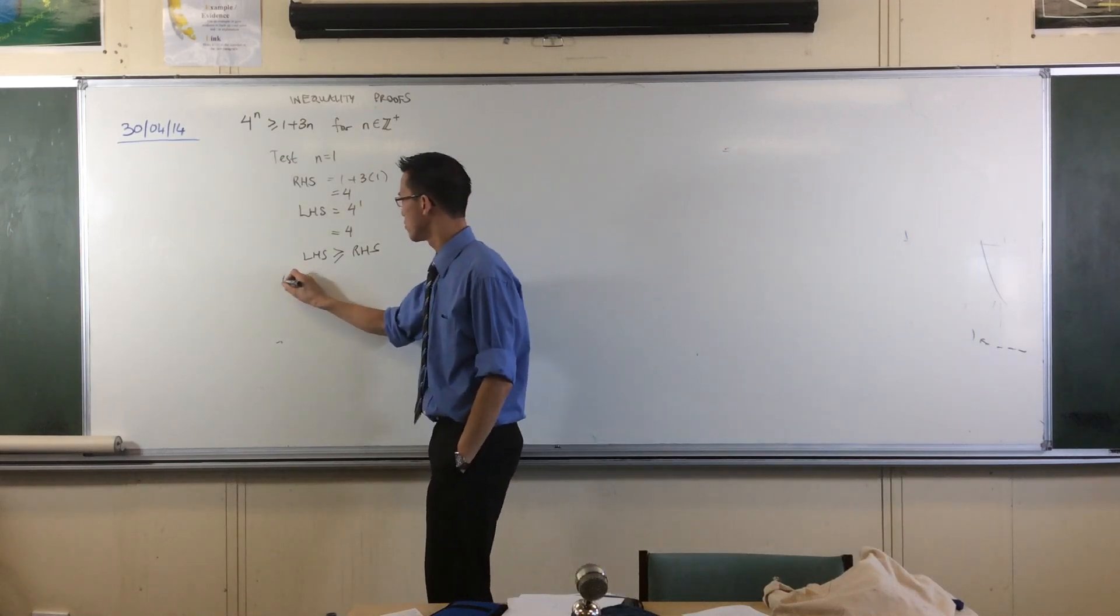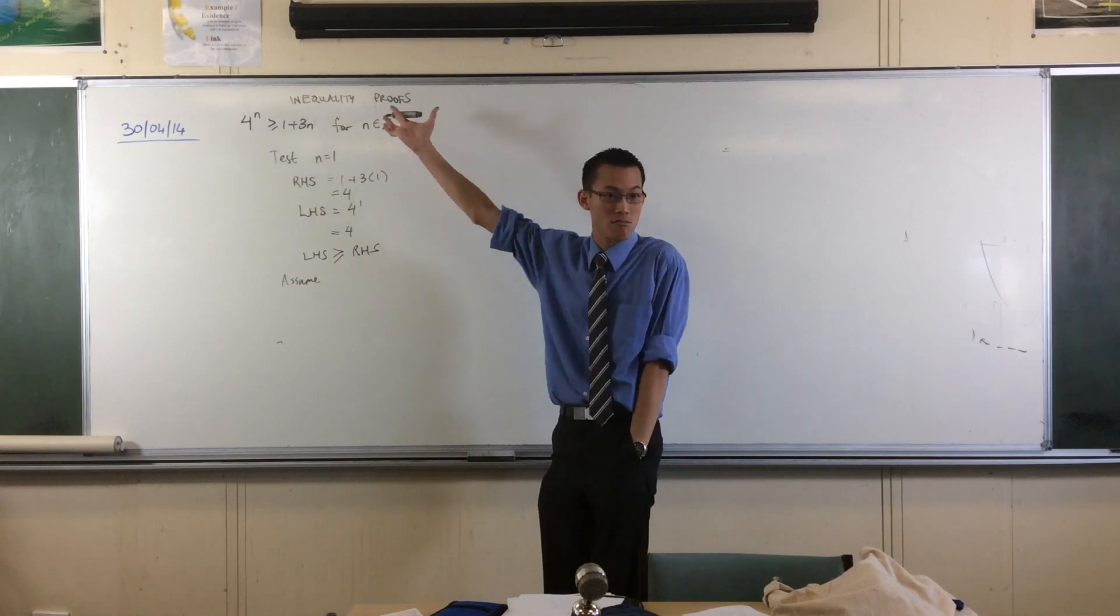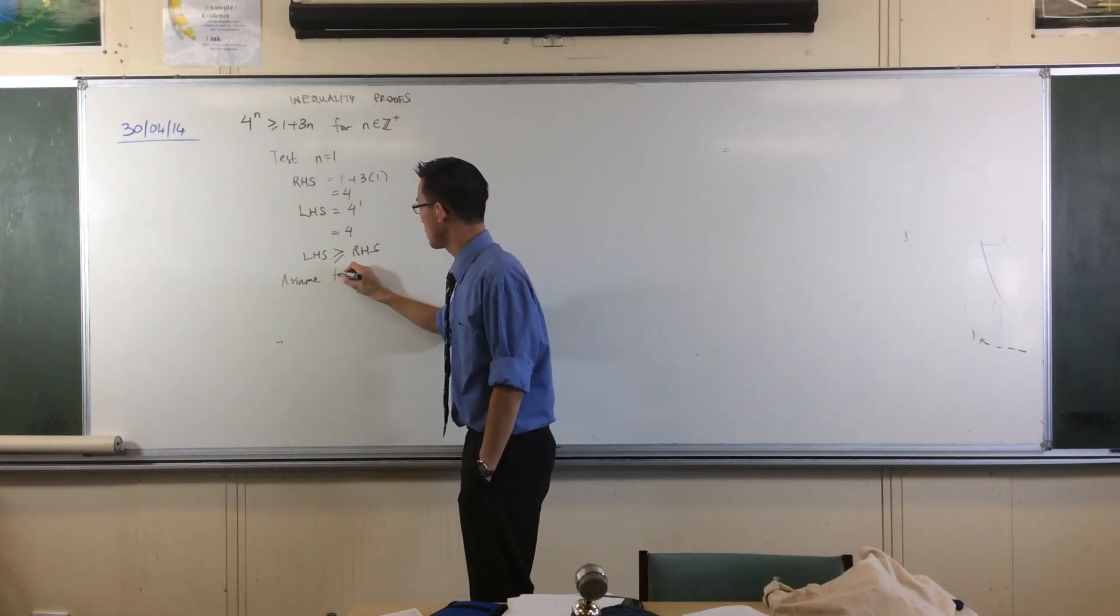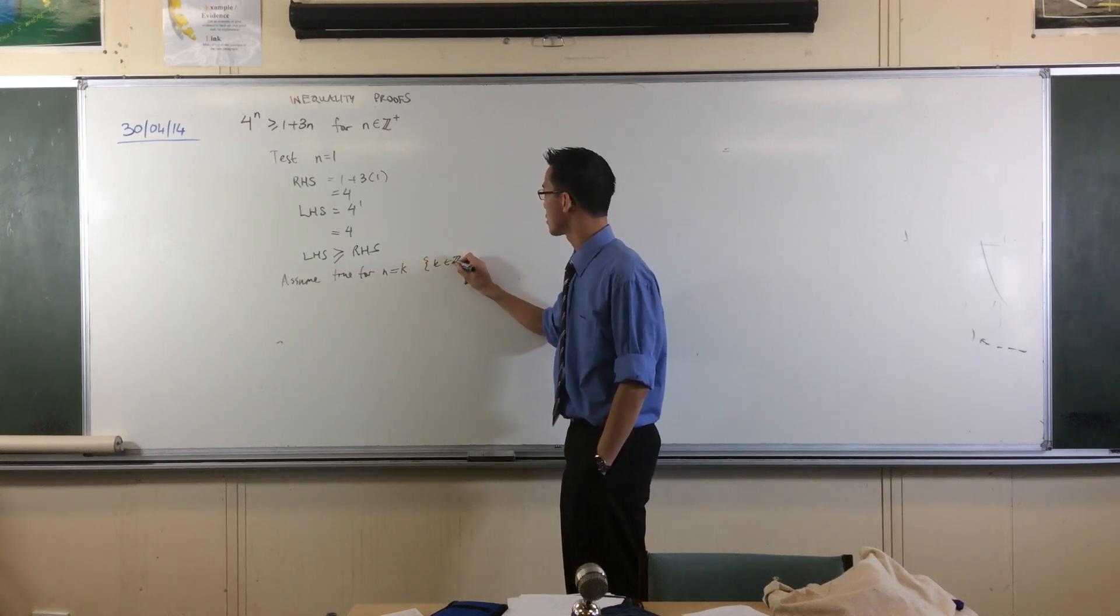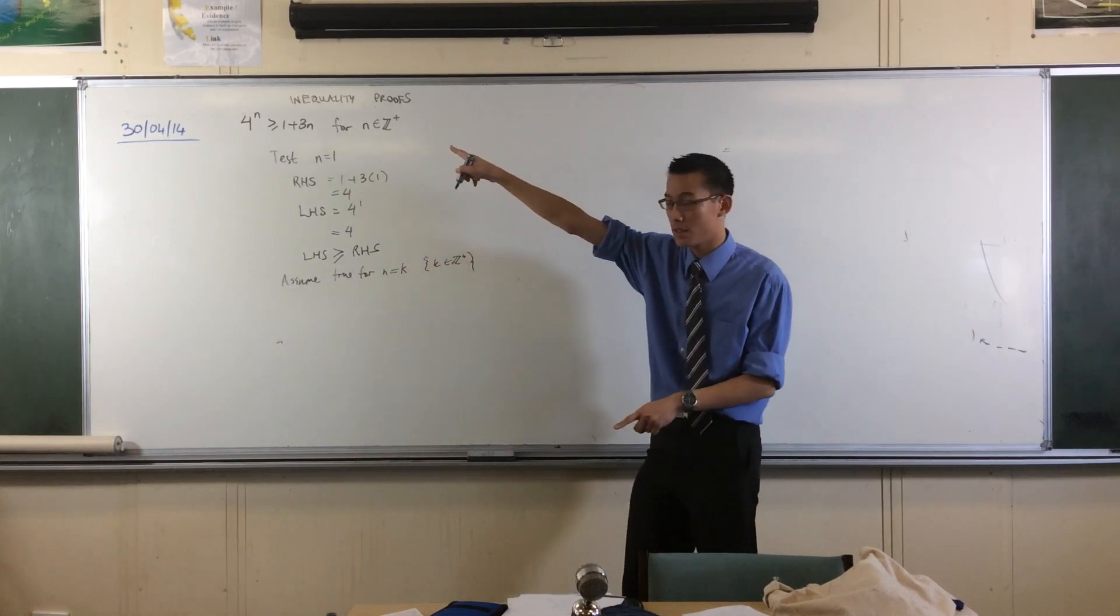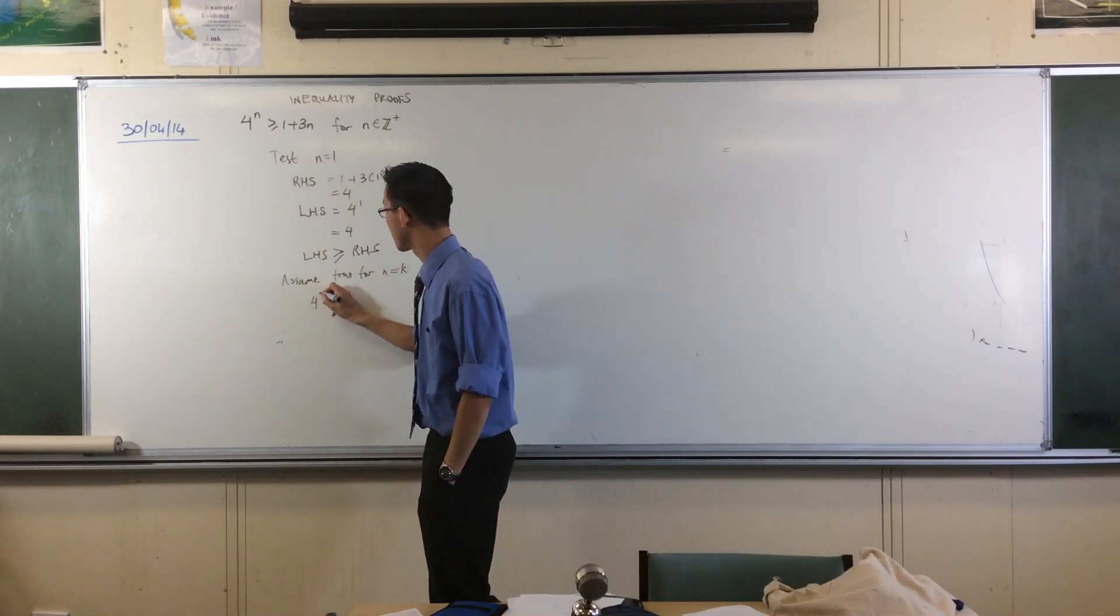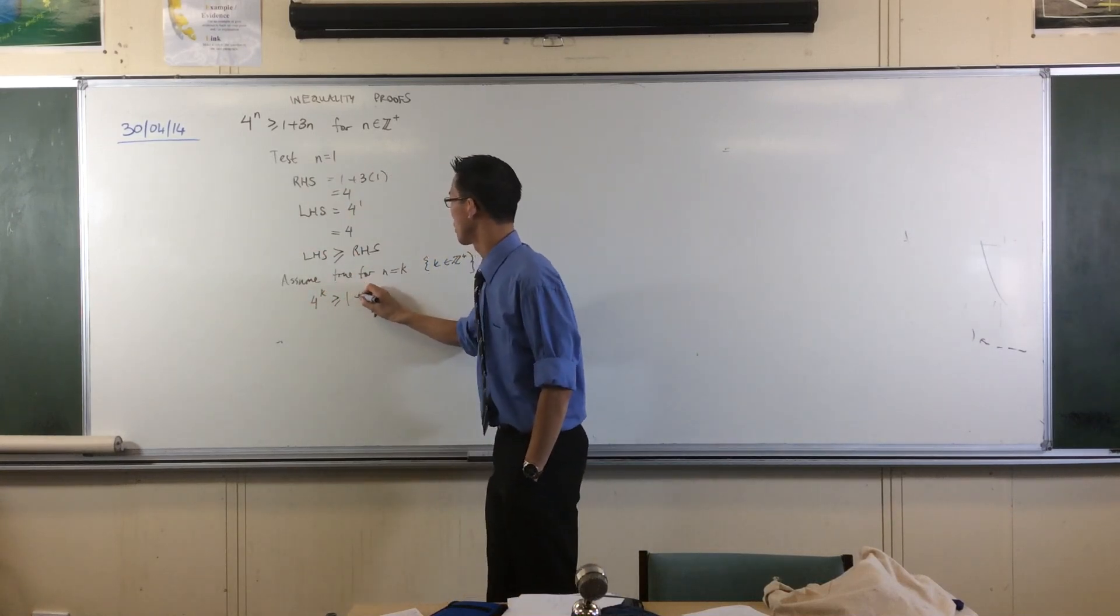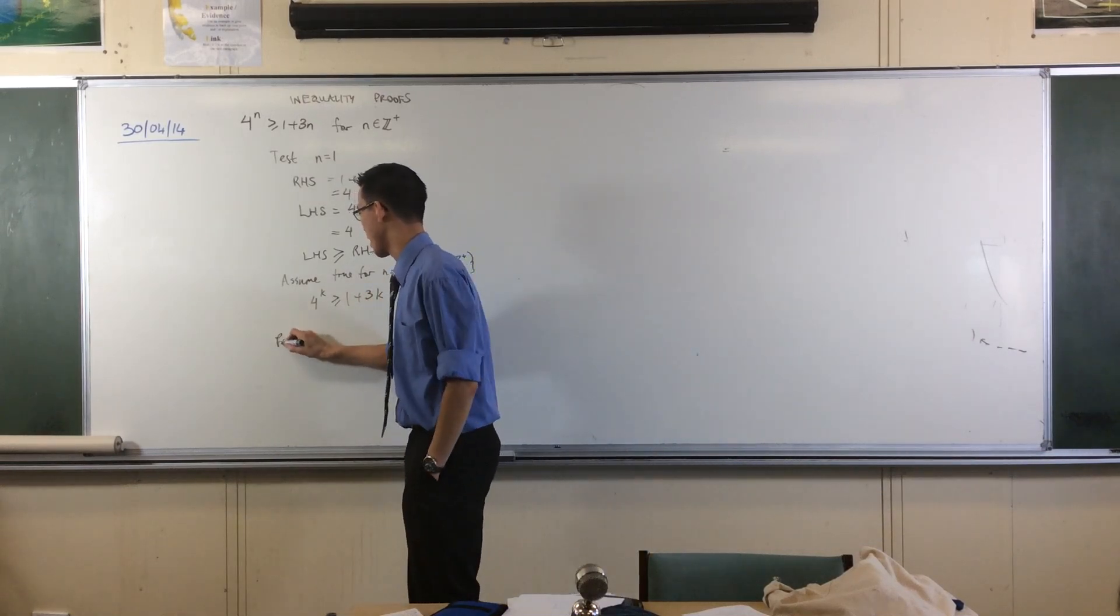What do I assume? I'll just stick my k's in, right? Assume it's true for n equals k, where k is the same kind of number that n is. That's terrible. So it looks like this: 4 to the k is greater than or equal to 1 plus 3k. Now we get down to our work step. Prove.